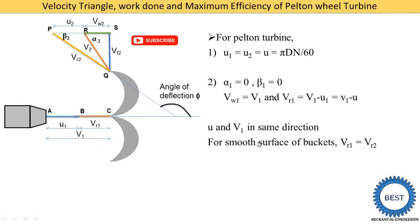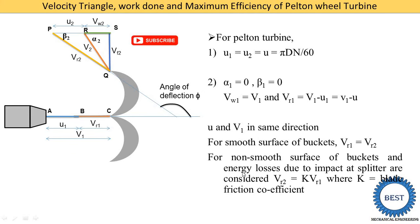For a smooth bucket surface, the relative velocities VR1 and VR2 are equal. However, if friction loss is given in a problem, VR1 and VR2 are not the same. In that case we use the equation VR2 equals k times VR1, where k is the blade friction coefficient. For example, if k equals 0.85, you find VR2 using this equation.